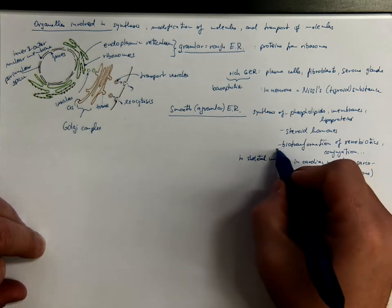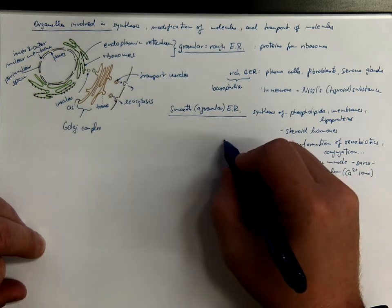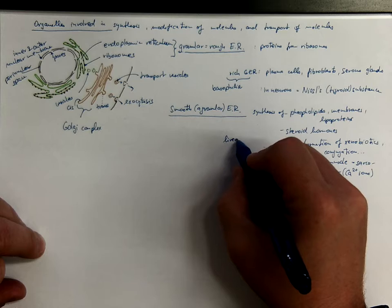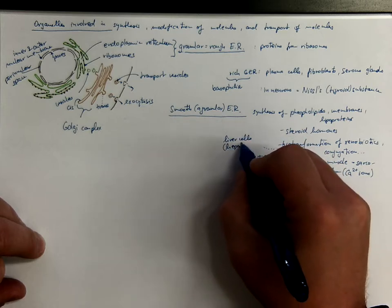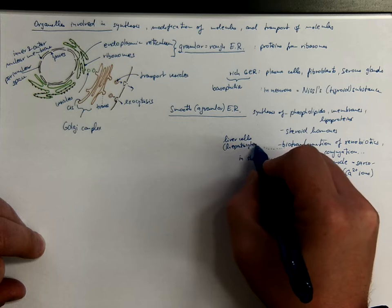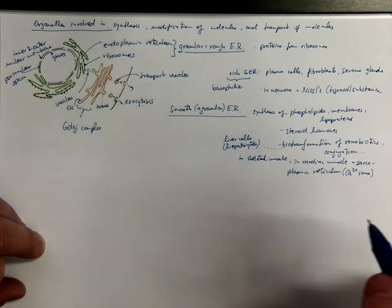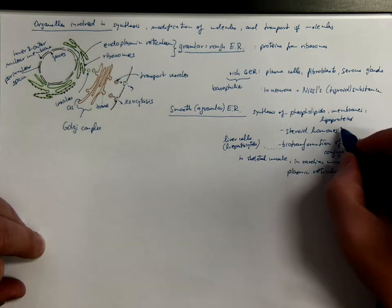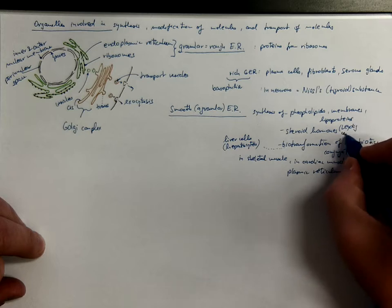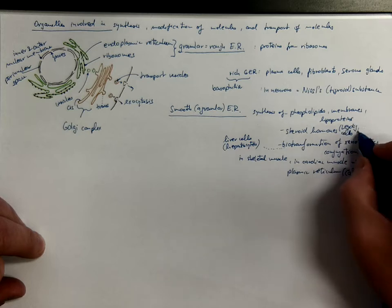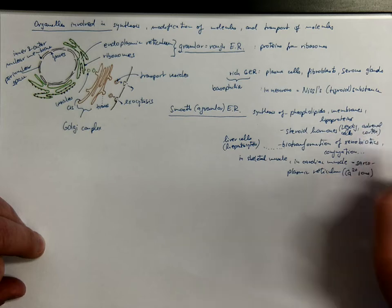This biotransformation occurs, for example, in liver cells, namely the epithelial liver cells called hepatocytes. So they have very rich smooth endoplasmic reticulum. And which cells are producing steroid hormones, for example, Leydig cells of testis or adrenal cortex, and more.